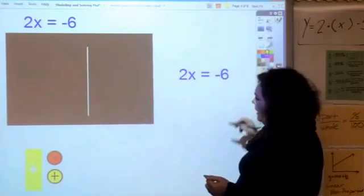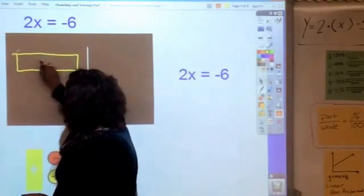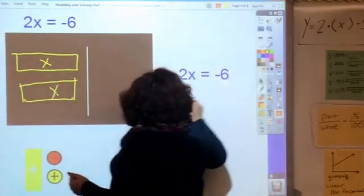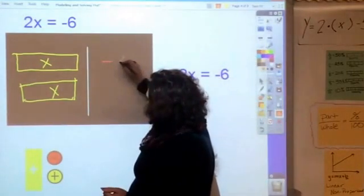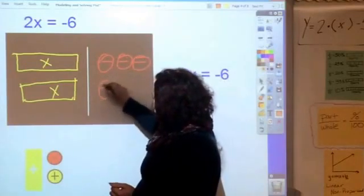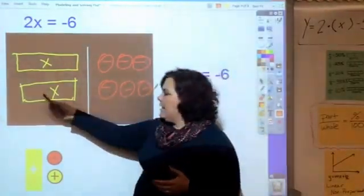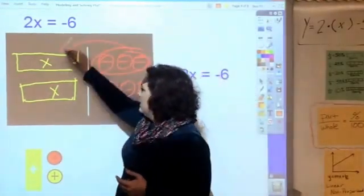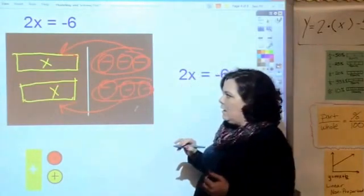I have x and x, and I have six negatives. I'm going to line this up to show you that three negatives are going to go into each of these. Three negatives go into this and three negatives go into this, so x equals negative three. That's how you show it with the model.